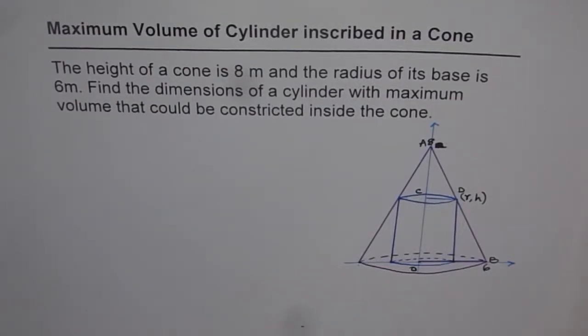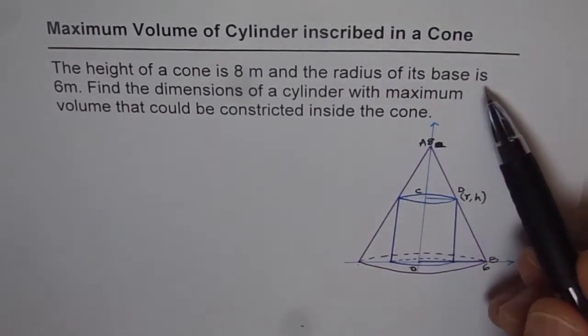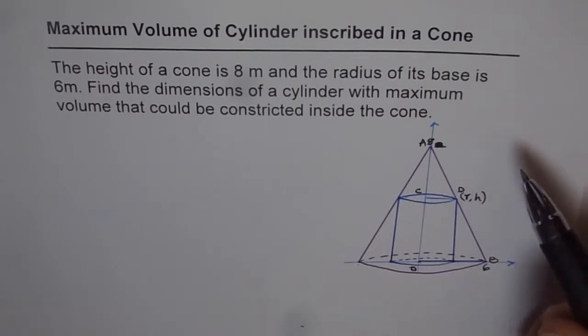Here is an application problem on derivatives. Maximum volume of cylinder inscribed in a cone. The height of a cone is 8 meters and the radius of its base is 6 meters. Find the dimensions of a cylinder with maximum volume that could be constructed inside the cone.